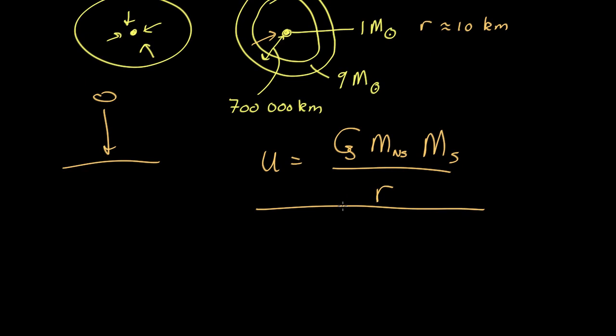So in this case, the change in gravitational potential energy, so delta U, the change in energy, is equal to this at the beginning, the difference between this at the beginning and this at the end. So it's going to be G, M neutron star, M shell,